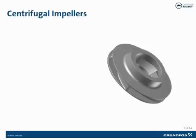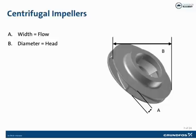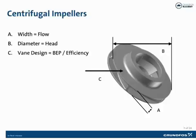The design of the impeller is very important. The width of the cross-sectional area of the vanes is the major determining factor of the amount of flow produced by the impeller. The diameter of the impeller is the major determining factor of the amount of head or pressure that can be produced. And the vane shape is the major influence on the impeller's performance or efficiency.